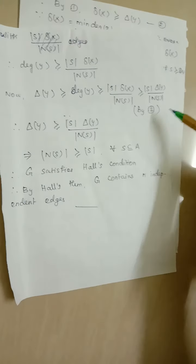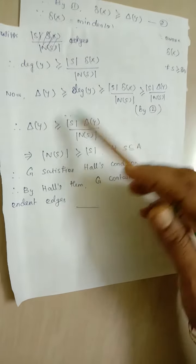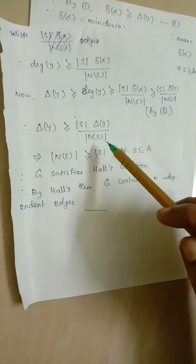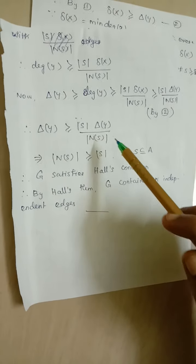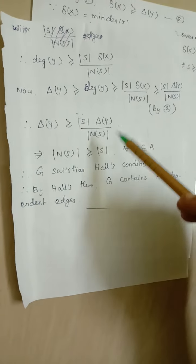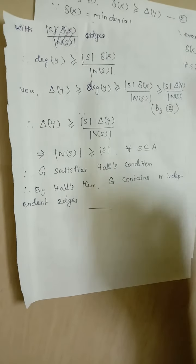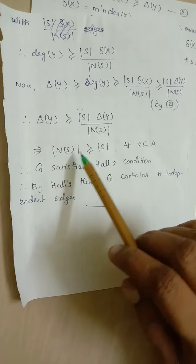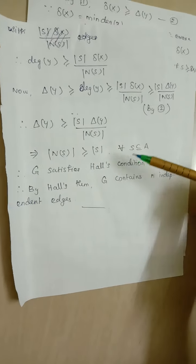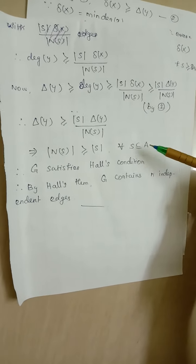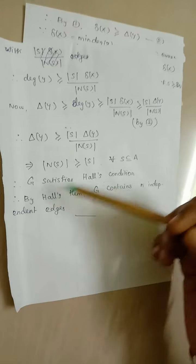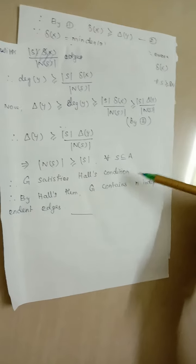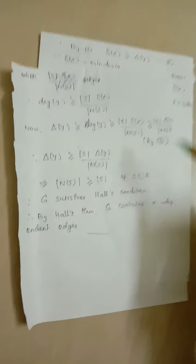From this we can conclude δ(Y) ≥ |S| · δ(Y) / |N(S)|, and therefore the cardinality of N(S) is greater than or equal to the cardinality of S for all S contained in A. That means G satisfies Hall's condition. So, by Hall's theorem, G contains N independent edges.